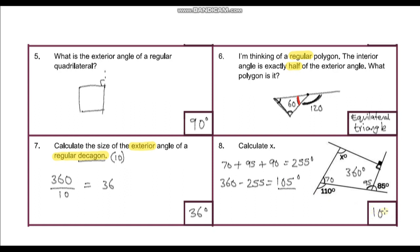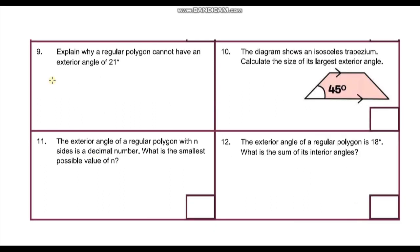360 minus 255 gives us 105 degrees, so that is my answer for x. We've now gone through the first eight questions.